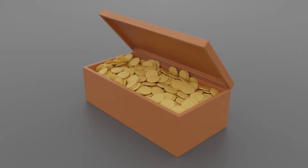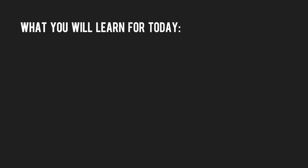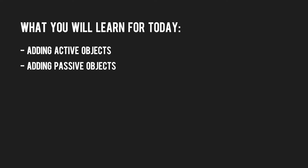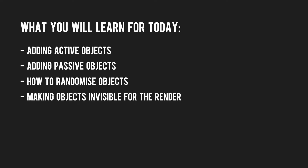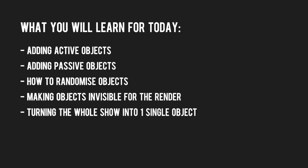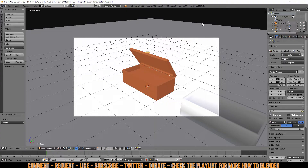Welcome to a Blender how-to. Today: filling spaces with items without doing this manually. I'll also show you how to make this into one solid object, so you can use it as a game asset. Here's what you will learn: adding active objects, adding passive objects, how to randomize objects, making objects invisible for the render, and turning the whole scene into one single object.